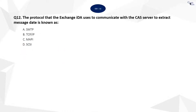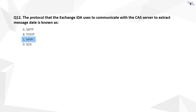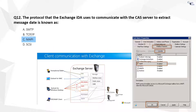Question 12. The correct answer is C. MAPI is a client protocol that lets users access their mailbox by using Outlook or other MAPI email clients. By default, MAPI access to a user mailbox is enabled. Disabling MAPI access to a mailbox prevents the user from using Outlook to access their mailbox in exchange mode.